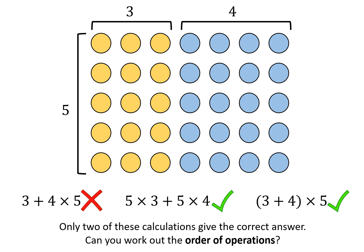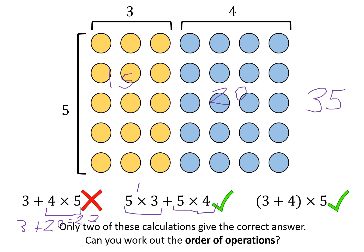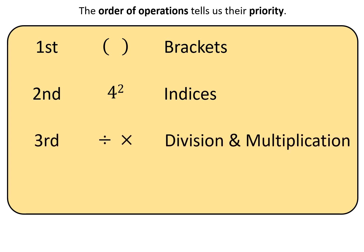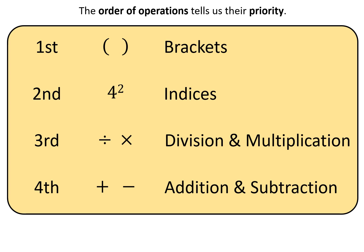Only two of these calculations give the correct answer — can you work out the order of operations? Let's count the circles: that'll be 15 and that's going to be 20, so the final answer should be 35. This one gives 3 plus 20 which is 23 — that one is not right. This one is actually right because we do the multiply first: 15 plus 20 gives 35. This one we do the brackets first: 3 plus 4 is 7, and 7 lots of 5 is 35. So brackets have priority, then indices, then multiply and divide, then add and subtract — that's BIDMAS.